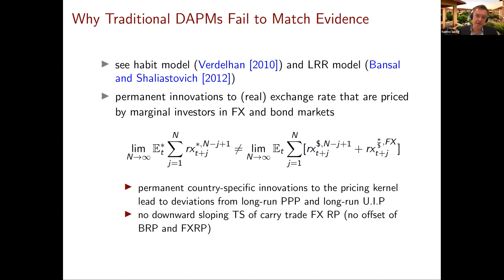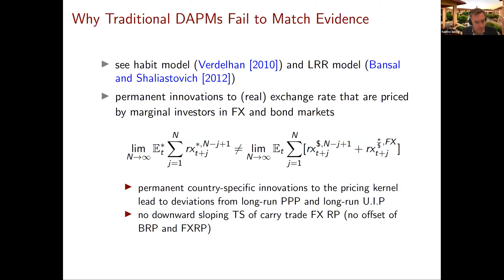Canonical asset pricing models — a habit model and a long-run risk model — when adapted to match moments of currency markets, will struggle with long-run uncovered interest rate parity, because in those models you get permanent shocks to real exchange rates and deviations from PPP built in. Unless you shut those down, long-run UIP will not hold. More recent work — for example by Gourinchas et al. and Greenwood et al. — delivers segmented bond market models that don't suffer from this problem and do enforce long-run UIP.